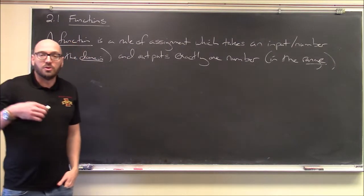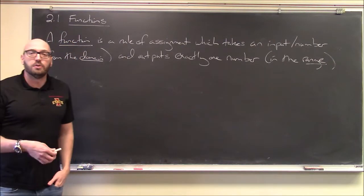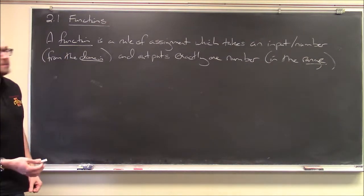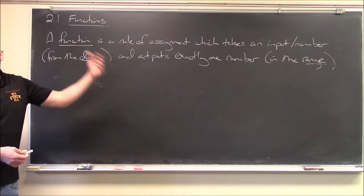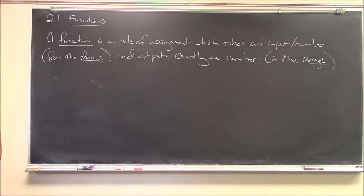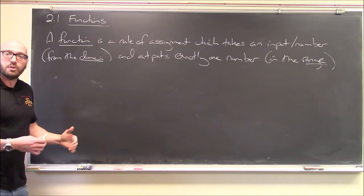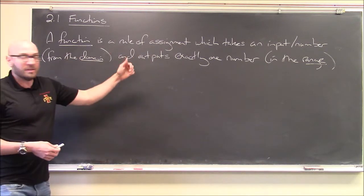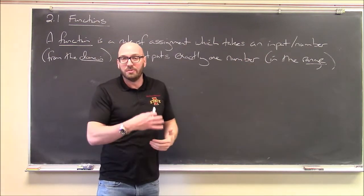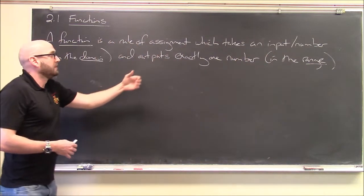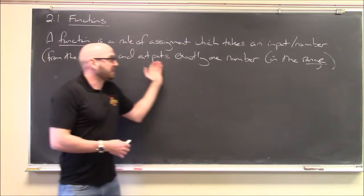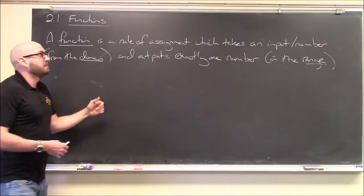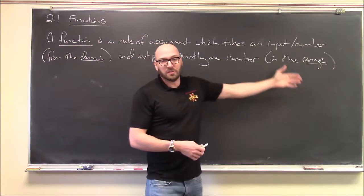We ended last week talking about graphs of straight lines — graphs of linear functions — which leads naturally into what we'll be talking about today: section 2.1 on all functions in general. A function is a rule of assignment that takes an input (a number) and outputs exactly one other number. The set of numbers you plug in is called the domain, and the set of numbers you can possibly output is called the range.